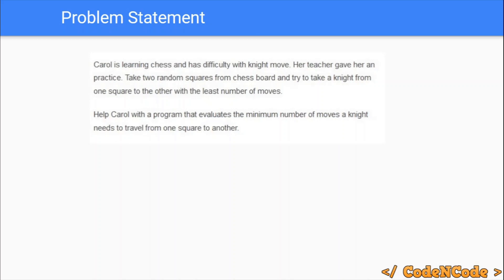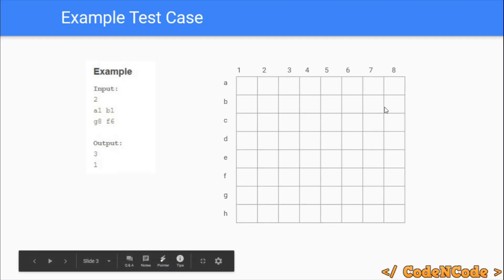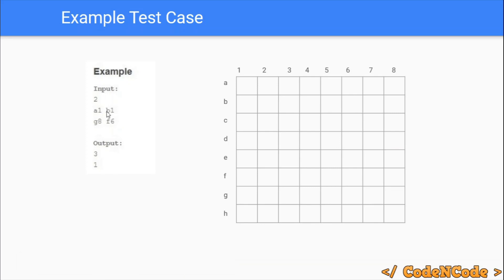This is a regular chess board where columns are numbered 1 to 8 and rows are labeled a to h — an 8×8 chess board. There are two queries: in the first query, the starting point is A1 and the target point is B1. The knight is at A1 and the target is B1, and the answer is 3 — in 3 moves you can reach from the starting point to the target point.